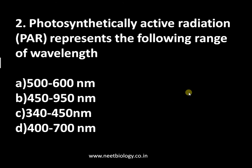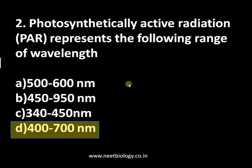Question number two: photosynthetically active radiation or PAR represents which range of wavelength? Option A: 500–600 nm, option B: 450–950 nm, option C: 340–450 nm, and option D: 400–700 nm. The answer is 400 to 700 nanometers, as the visible region of the electromagnetic spectrum is used by pigment molecules. In bacteria, absorption can occur in the infrared region — there is bacterial chlorophyll P870.